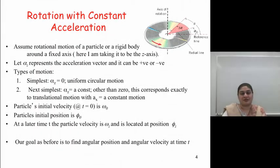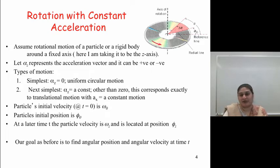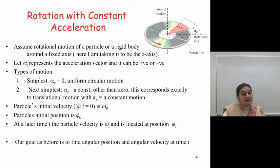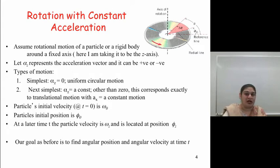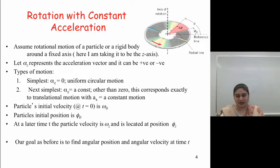Now let's talk about rotation with constant acceleration. If an object is rotating around a fixed axis — say the z-axis — then α_z represents the angular acceleration vector. There are three possible kinds of motion: uniform circular motion with no acceleration, constant angular acceleration (analogous to constant linear acceleration), and changing acceleration, which we will not address here.